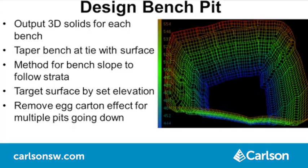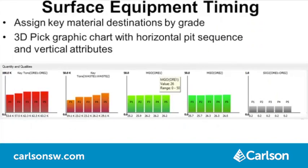The target surface can be set to an elevation instead of a surface model, and the program cleans up the egg carton effect when having multiple pits going down. With Surface Equipment Timing, you can now assign destinations for key material based on the material grade. The 3D pick routine has a new display option to show a graphic chart of the quantities and qualities as you select the mining blocks, with the pit sequence on the horizontal axis and the attributes on the vertical.